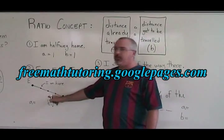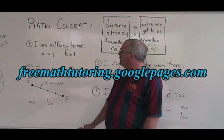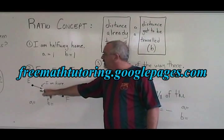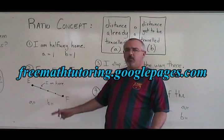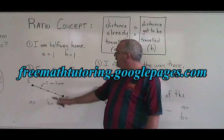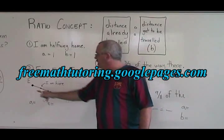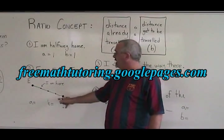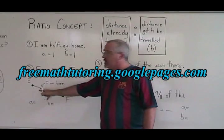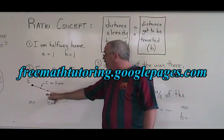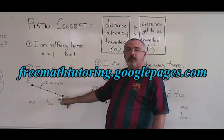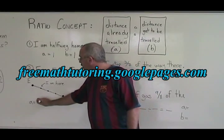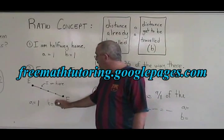Here is an example with a little drawing. Example 2: from E to F, if I am here, what is my A and what is my B? Well, if I am here and I am going from E to F, I have traveled 1 quarter of the distance. I have 1 quarter already traveled, which means I have 3 quarters that I still have to travel. My A is equal to 1 and B is equal to 3.